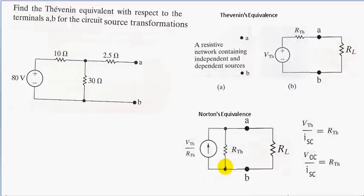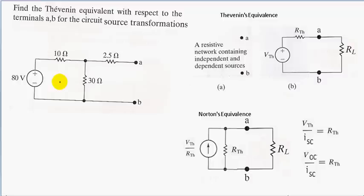Let's practice. I have this circuit right here: an 8 volt voltage source in series with a 10 ohm resistor. We can use source transformation to transform this voltage source in series with the resistor into a current source in parallel with the resistor. This simplifies our circuit because the 10 ohm resistor will be in parallel with a 30 ohm resistor, and by doing source transformation back and forth we can easily find our Thevenin equivalents.